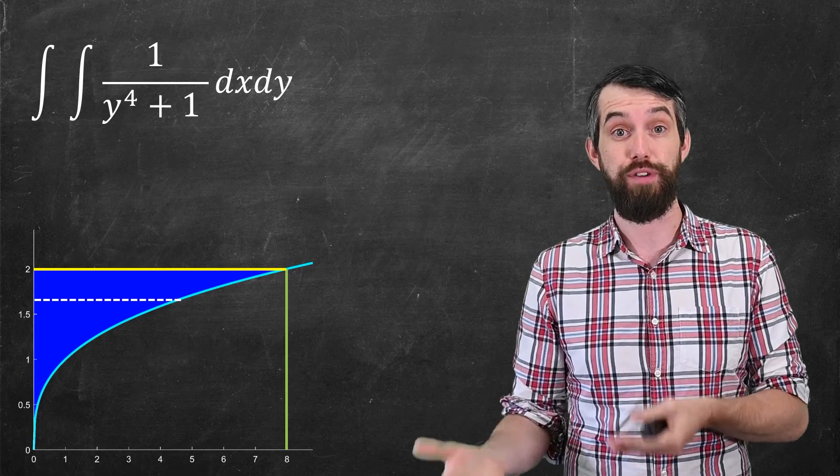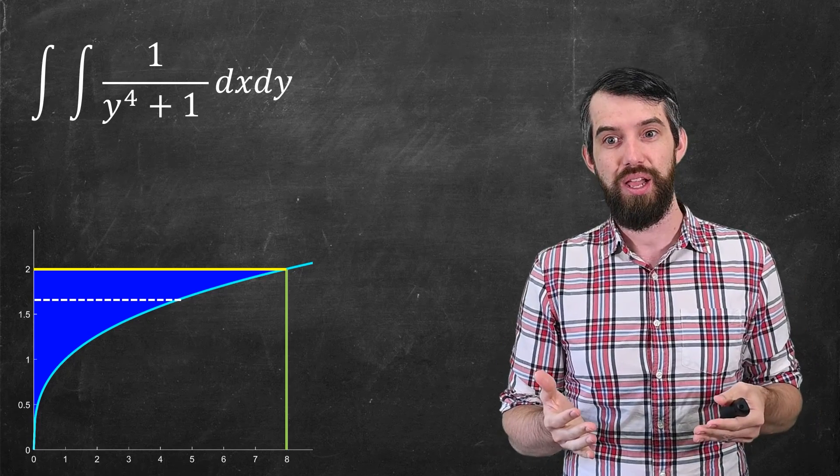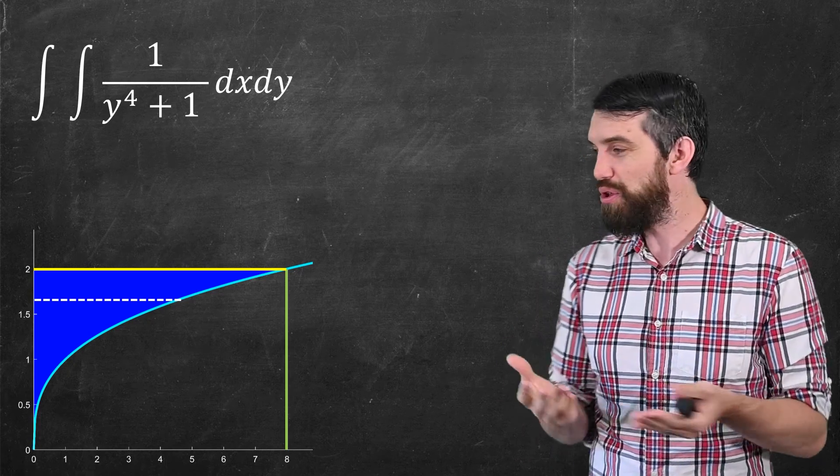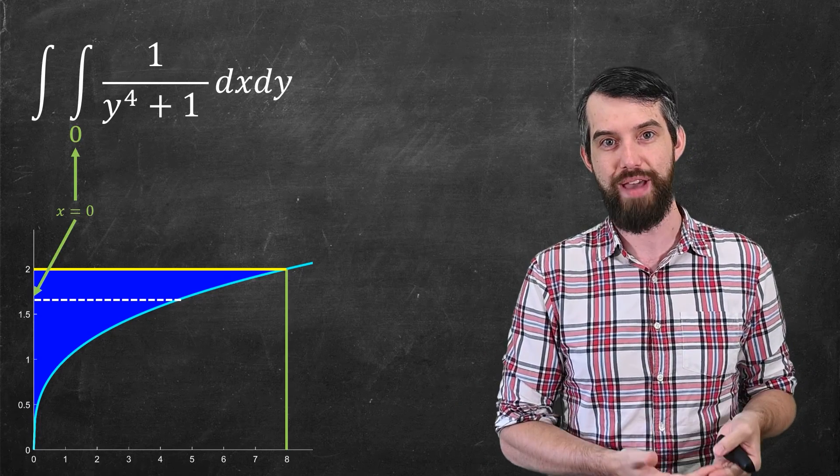Let's do the one with respect to x first. So the lower bound with respect to x, the integral, well, what's the smallest value of x that we see here? Well, it's just going to be the value of x equal to zero. That's the lowest possible value of x.